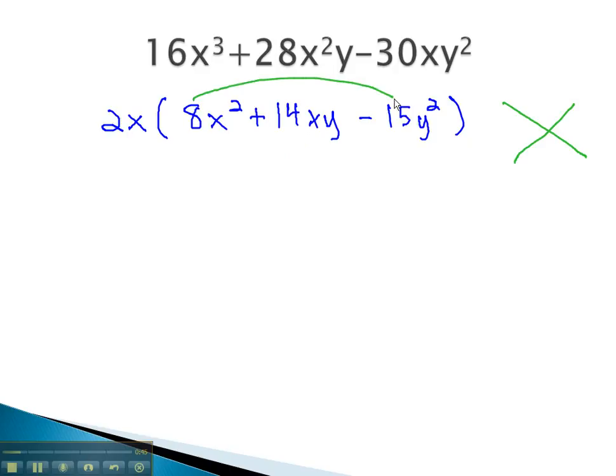We want to multiply to 8 times negative 15, or negative 120, and add to 14. Negative 120 is quite a large number, and may be difficult to find the right pair of numbers.